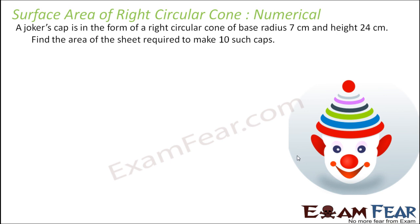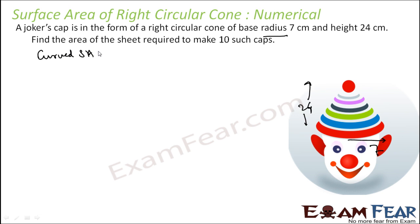A joker's cap is in the form of a right circular cone. The cap looks like a cone with base radius 7 and height 24. We need to find the area of sheet required to make 10 such caps. Since the base of the cap is hollow, we only find the curved surface area.